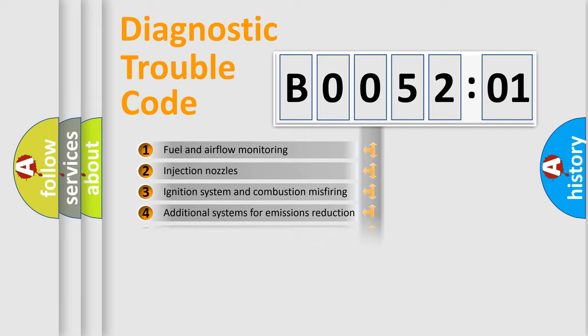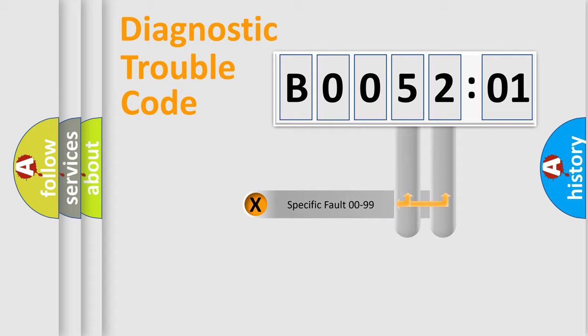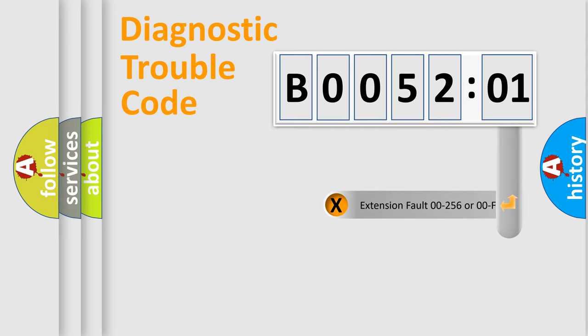The distribution shown is valid only for the standardized DTC code. Only the last two characters define the specific fault of the group. The add-on to the error code serves to specify the status in more detail.